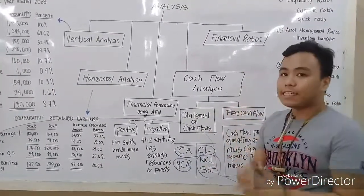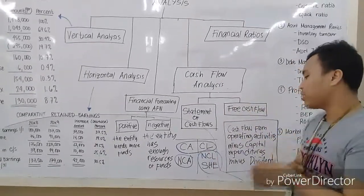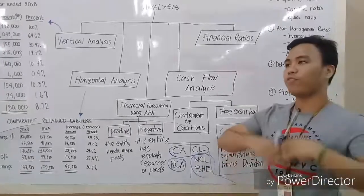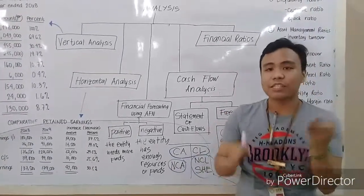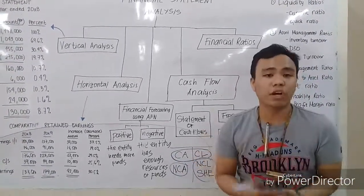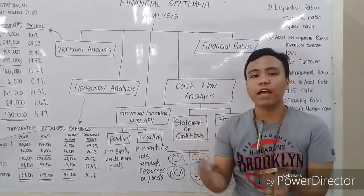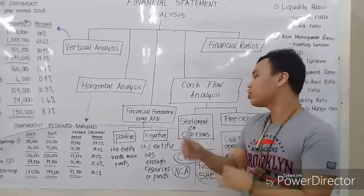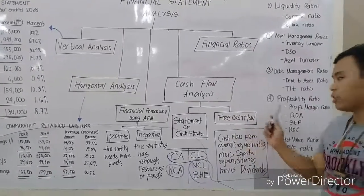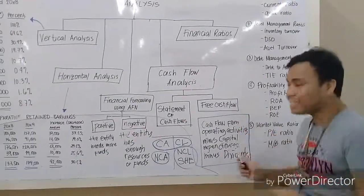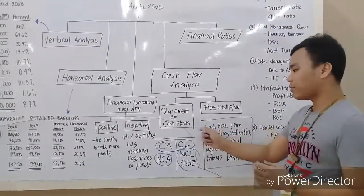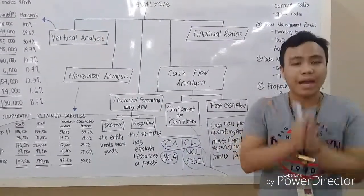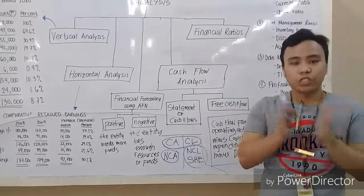The investing activities section covers transactions such as sale of property, plant, and equipment. The financing activities section relates to transactions in non-current liabilities and shareholders' equity, for example the sale of bonds. After each section is completed, the results are added together to compute the net increase or decrease of cash. Free cash flow is a byproduct of the statement of cash flows and represents the total amount of money that could theoretically be returned to shareholders if no future growth is realized.